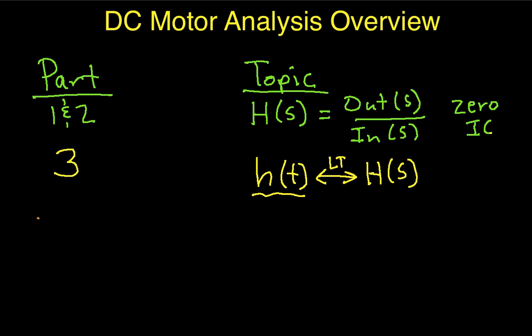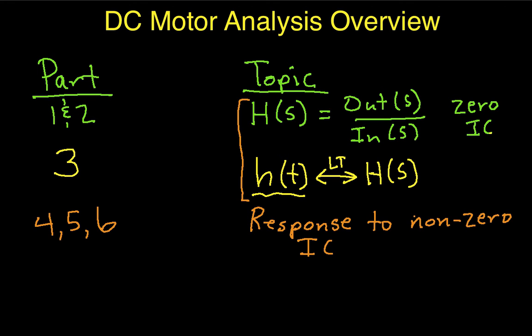Parts 4, 5, and 6 are going to be finding the response to non-zero initial conditions. So the idea here is unlike parts 1 through 3, where we've assumed that we have 0 initial conditions.